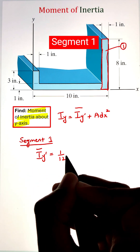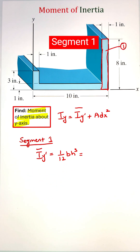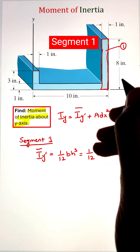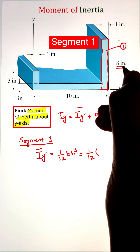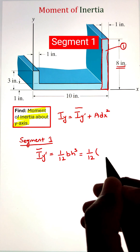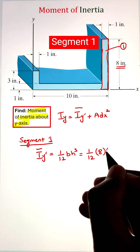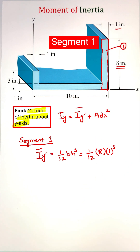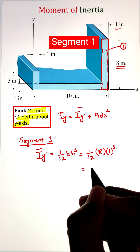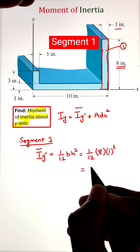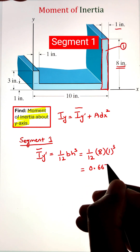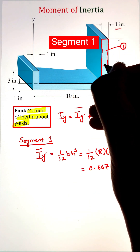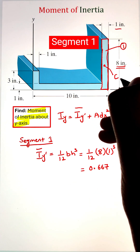Segment one has the dimensions of one inch by eight inches. Let's first calculate the moment of inertia about its centroidal axis. The formula for that is one over twelve times d cubed times h. Here, the value of d will be eight inches since that dimension is parallel to the y-axis across which we are calculating the moment of inertia. Plugging the values into the formula gives us 0.667 inch raised to the power four.